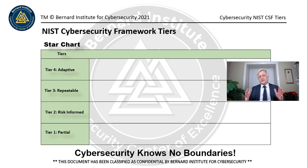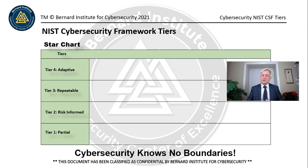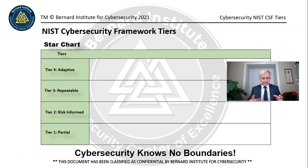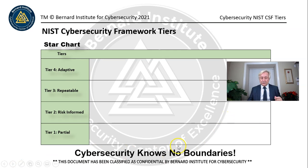The NIST Cybersecurity Framework includes something called tiers — there are four tiers. It does look similar to a capability maturity model, but its focus is on risk management. That's the big difference between most capability maturity models that look for a process to be matured. It starts with a partial level, then goes to risk-informed, repeatable, and adaptable — these are all different levels.